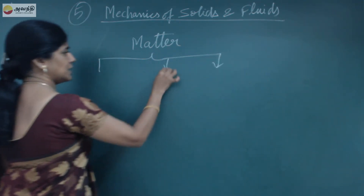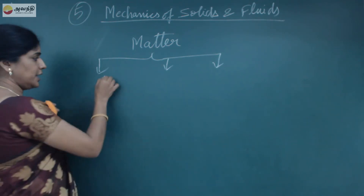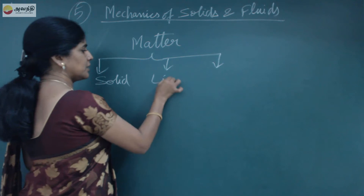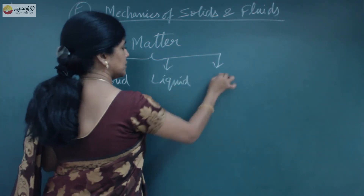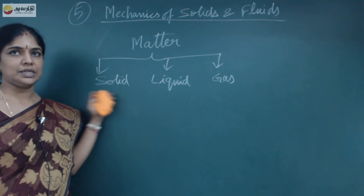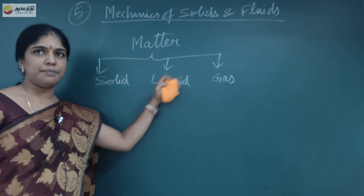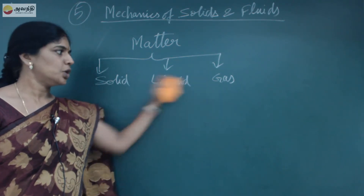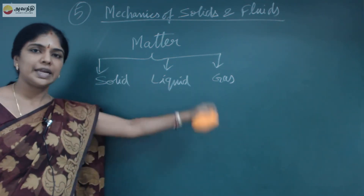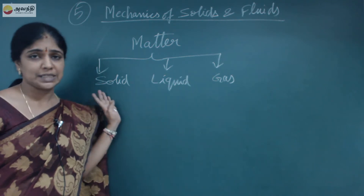The three states of matter are solid, liquid, and gas. In Tamil: thedam, thiravam, vayu. These are the three states of matter. In the 5th chapter there are three distinct properties corresponding to each state.